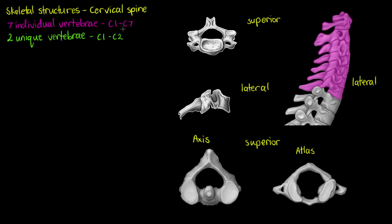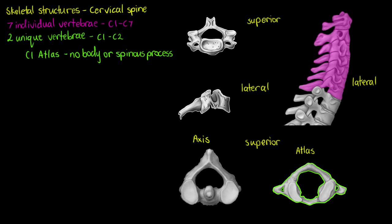C1 is the atlas. Our atlas is unique in that it is going to have no spinous process or body — I've just outlined it in green down here. But it does have large articular surfaces on its superior and inferior sides. That is going to allow it to articulate with the occipital condyles of our skull. You can remember the atlas as C1 by thinking about Atlas who supported the heavens in Greek mythology — our C1 supports our world, which is our skull and brain. Our atlas is also going to articulate inferiorly with the axis.